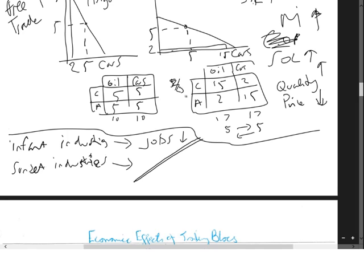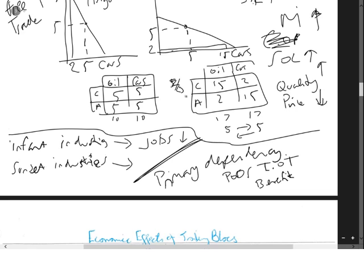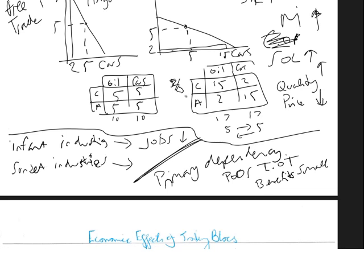The other way to look at it is potentially link it into primary dependency. So that you could say that maybe because of poor terms of trade the benefits you get are small. The benefits that China get are large as they are selling you secondary goods and they benefit more than you would.